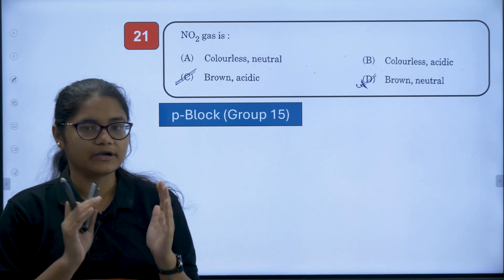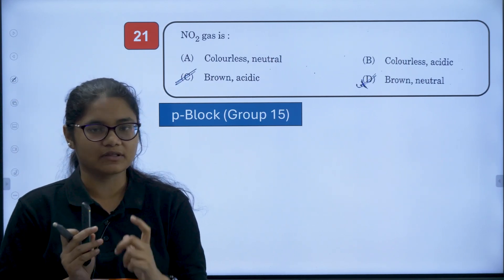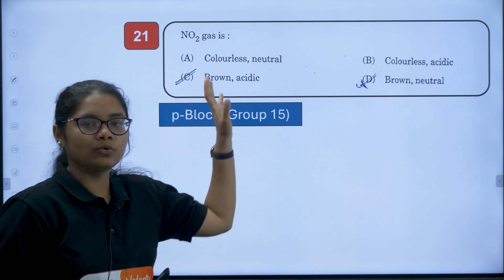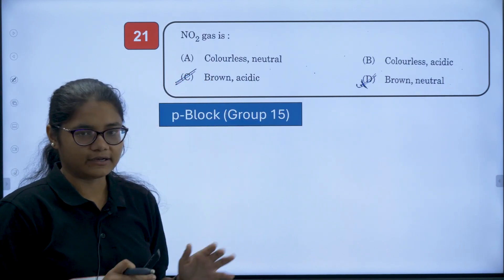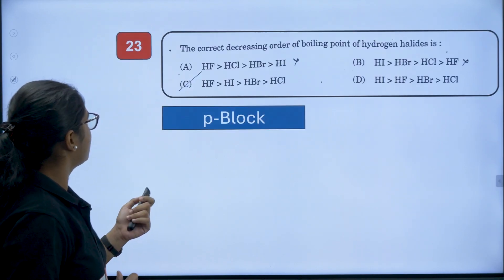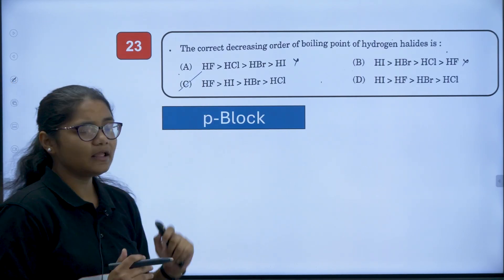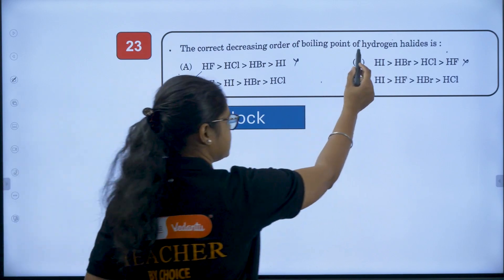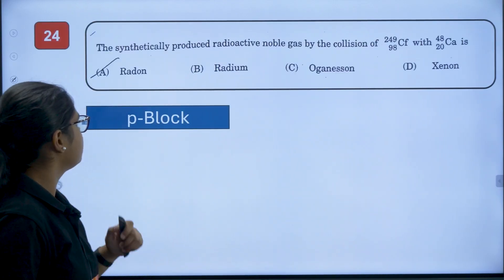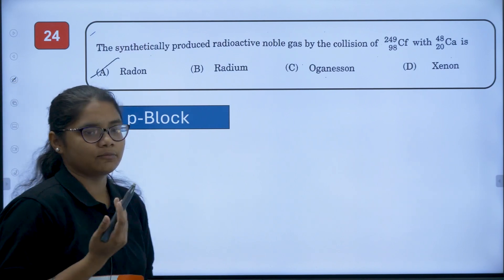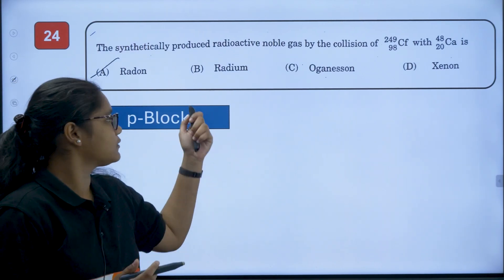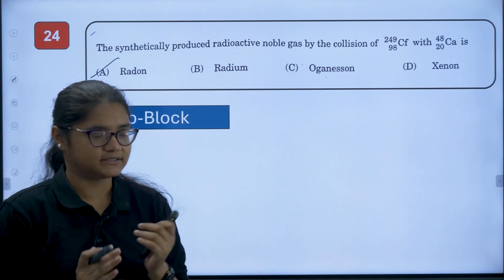For P Block, the majority of the content — properties of compounds and similar topics — was deleted; only the general trends remained. Question number 21 is about NO₂ properties and is from a deleted portion, so it will not be evaluated. Similarly, question number 23 on hydrogen halides is also from the P Block chapter and is deleted. Question number 24, which is from Group 18, is also from the deleted P Block portion and will not be evaluated.